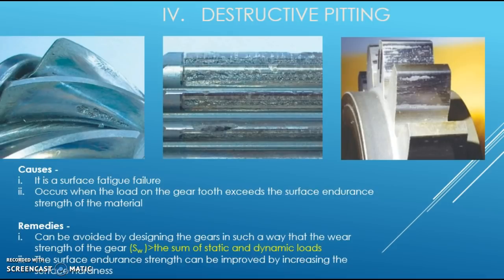Destructive pitting is a surface fatigue failure which occurs when the load on the gear tooth exceeds the surface endurance strength of the material. Surface endurance strength plays a vital role in deciding the life of the gear tooth. This failure is characterized by pits which continue to grow, resulting in complete destruction of the tooth surface and in some cases even premature breakage of the tooth. Destructive pitting depends upon the magnitude of Hertz contact stress and the number of stress cycles. It can be avoided by ensuring the wear strength of the gear tooth is more than the sum of static and dynamic loads, and surface endurance strength can be improved by increasing surface hardness.